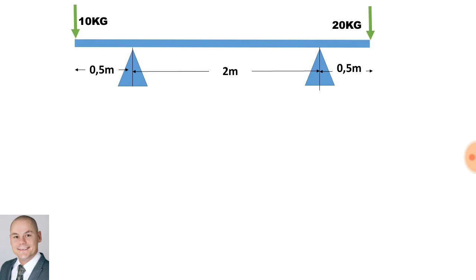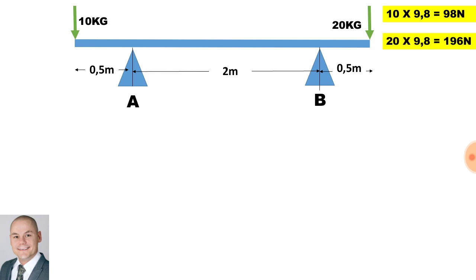We have two forces pushing down on the beam, and two unknown forces pushing up onto the beam. We will refer to these two unknown forces as Fulcrum A and Fulcrum B, which are the supports. To convert kilograms into newtons, we multiply by the acceleration of 9.8. Therefore, we have a force of 98 newtons and a force of 196 newtons pushing down onto the beam.